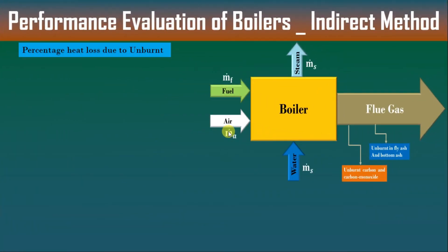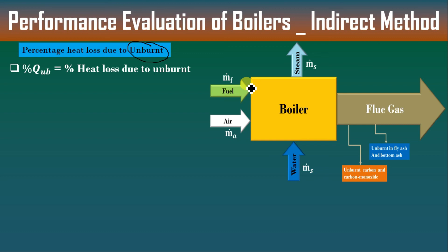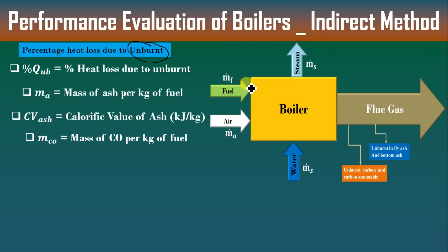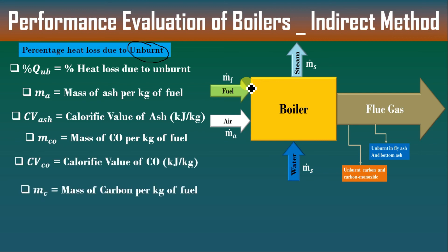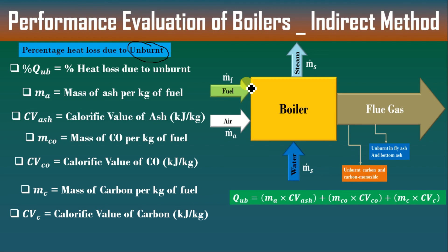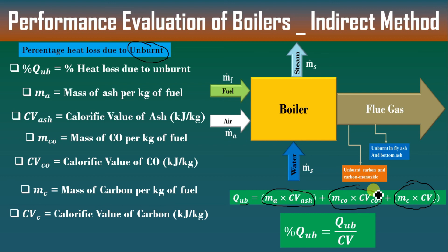Next, we discuss the percentage of heat loss due to unburned carbon, carbon monoxide, and ash. When we talk about unburned, we consider carbon and ash — sometimes carbon comes out as carbon monoxide. This is denoted as QUB (UB for unburned). QUB = (mass of ash × calorific value of ash) + (mass of carbon monoxide × calorific value of CO) + (mass of carbon × calorific value of carbon). If any of these are not given in the question, neglect that term. The percentage of heat loss due to unburned = QUB divided by Cv.